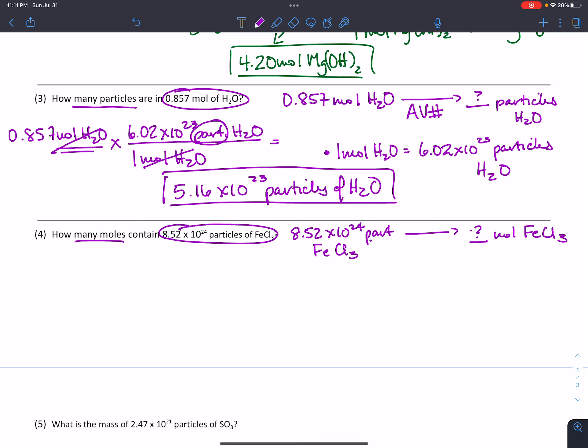As we're going from particles to moles, that means again we're going to need Avogadro's number. And just as we saw above, one mole of any substance contains the same amount, 6.02 times 10 to the 23rd particles of that substance. So you can see the conversion factor looks really similar to the one we used in problem 3 above. We've just swapped out H2O for FeCl3.